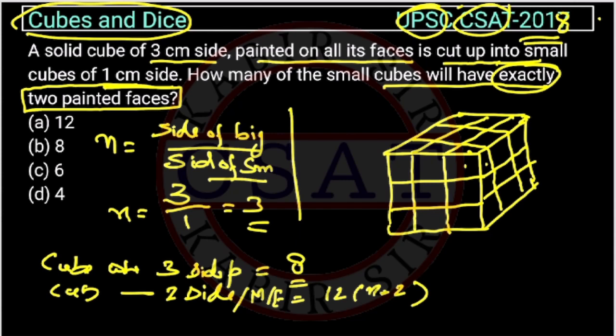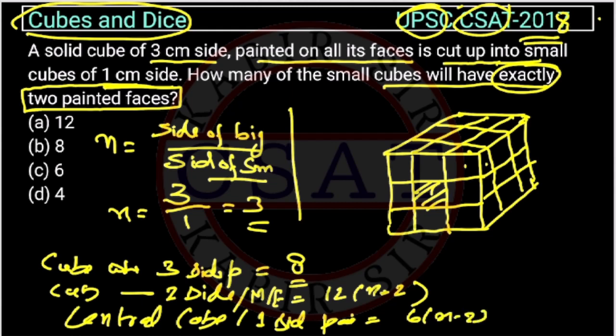If we want to know the central cube, so central cube is how much is going to be. Central cube or we can say one side painted, this one, this is central cube, one side painted. So this will be 6 times n minus 2 square.